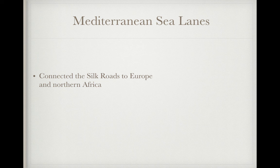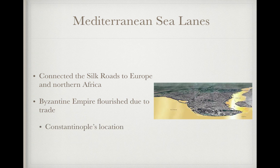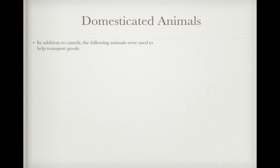Mediterranean sea lanes connected the Silk Roads to Europe and Northern Africa. The Byzantine Empire will flourish during this time due to trade and especially Constantinople's location — if you look at it, you can see it's surrounded by water and it is a major stop for trade.